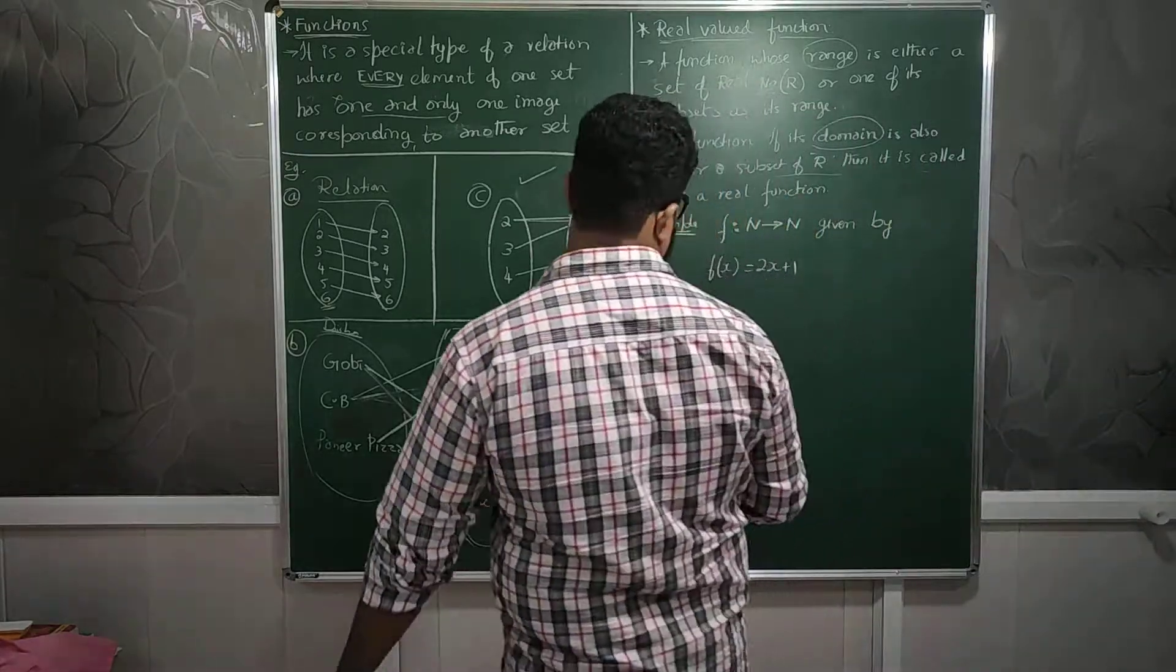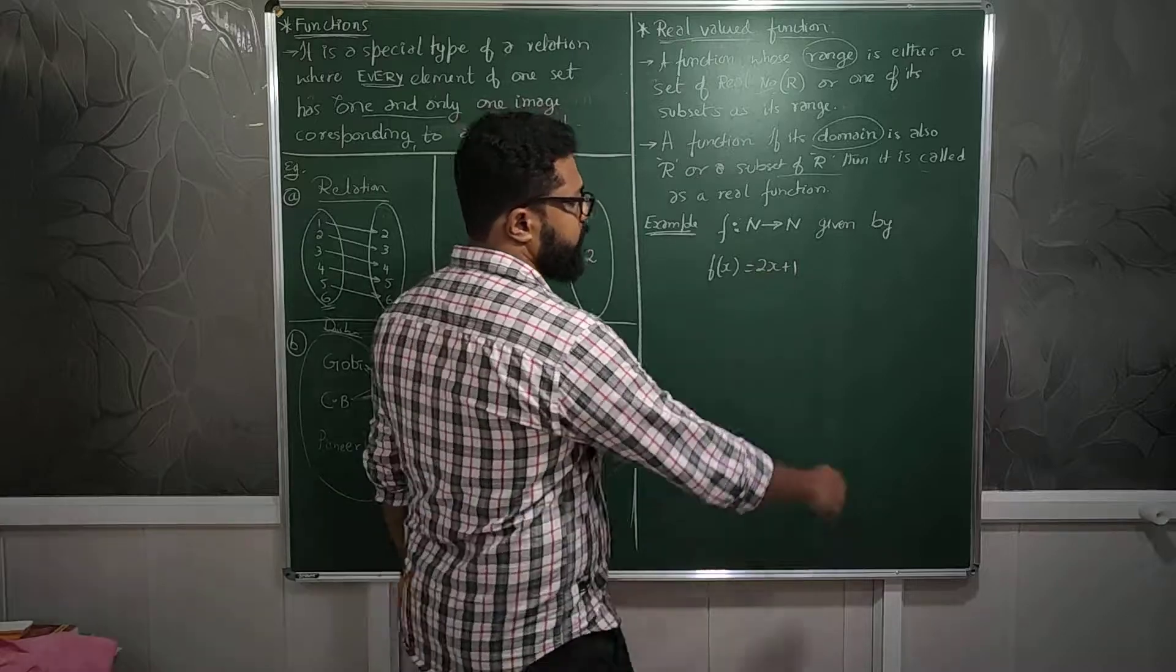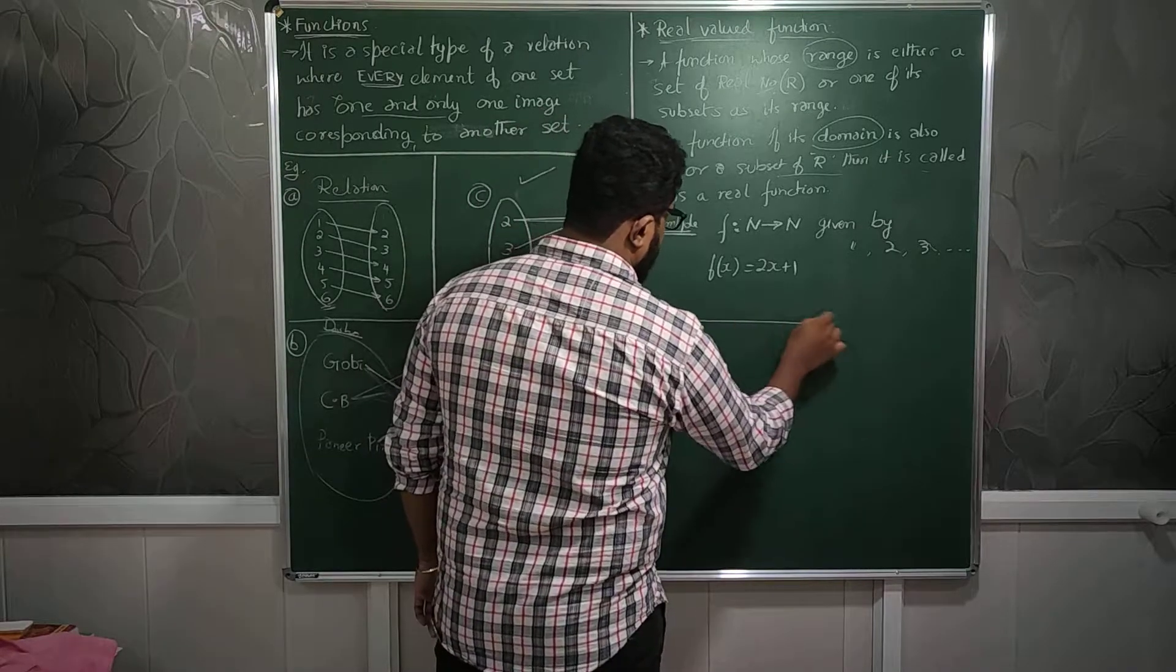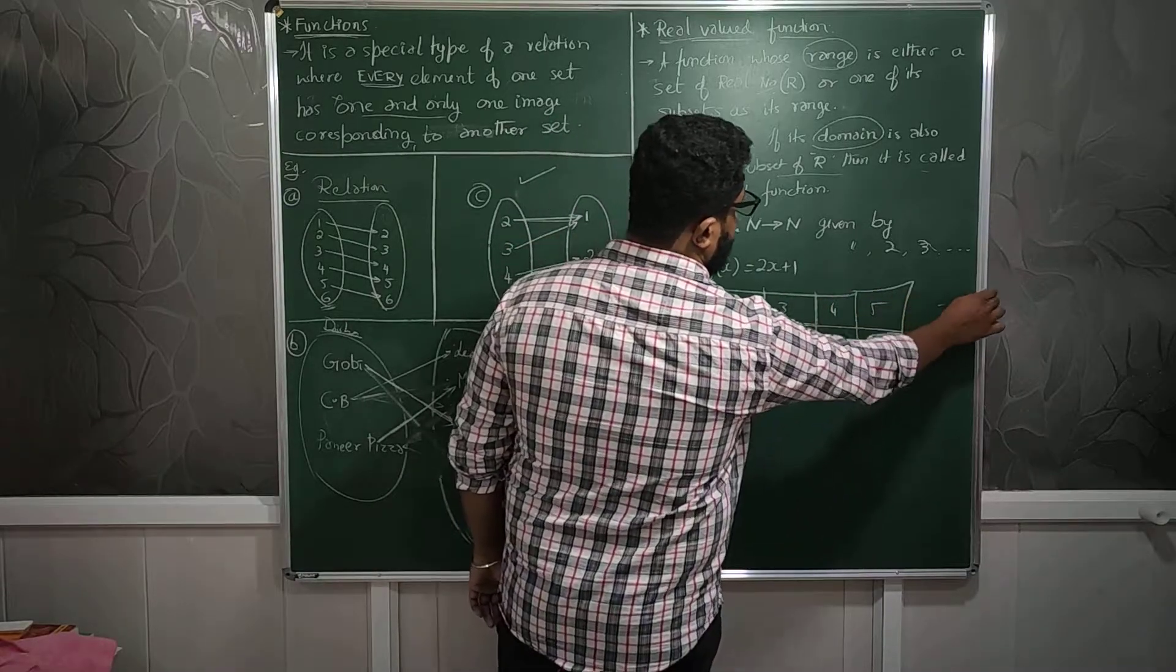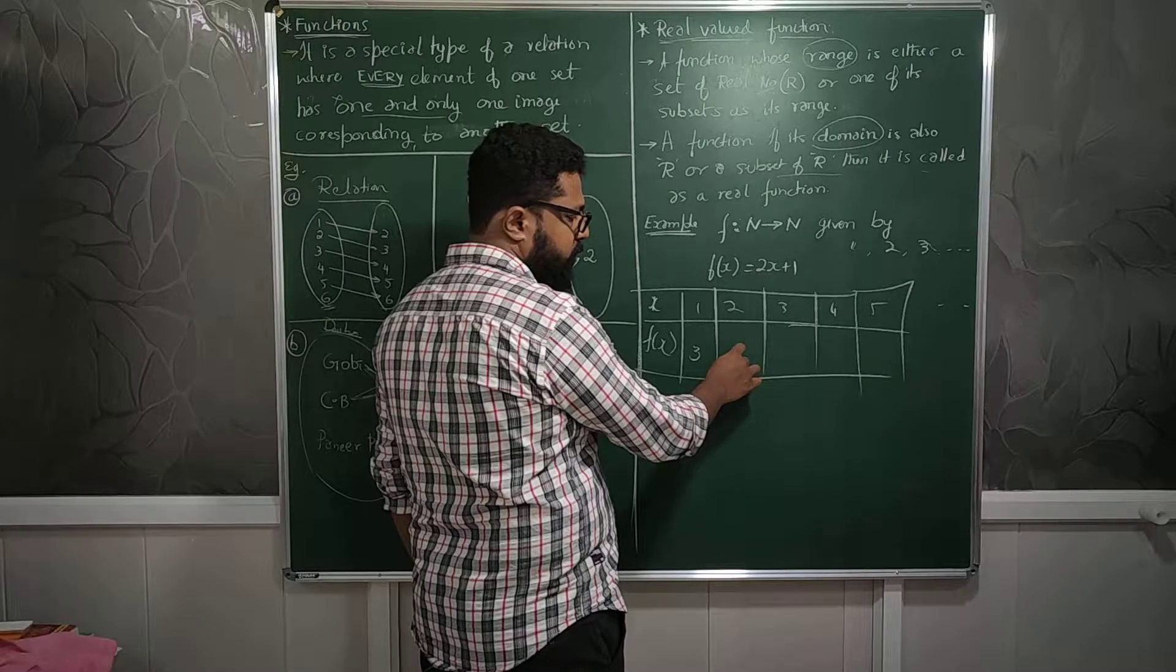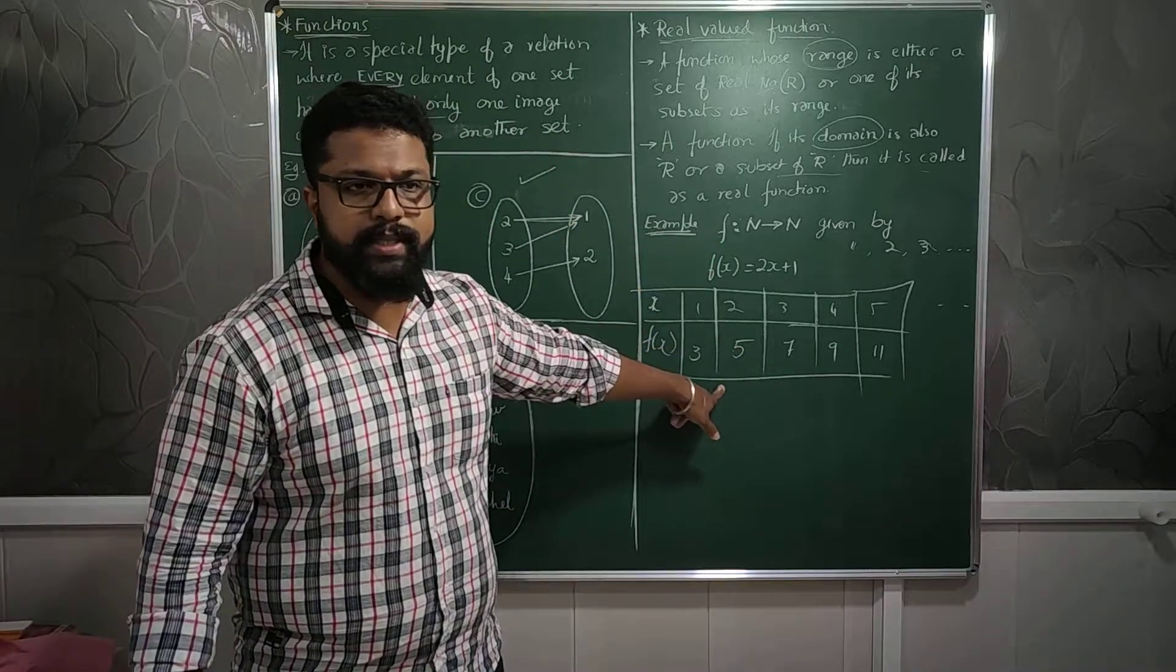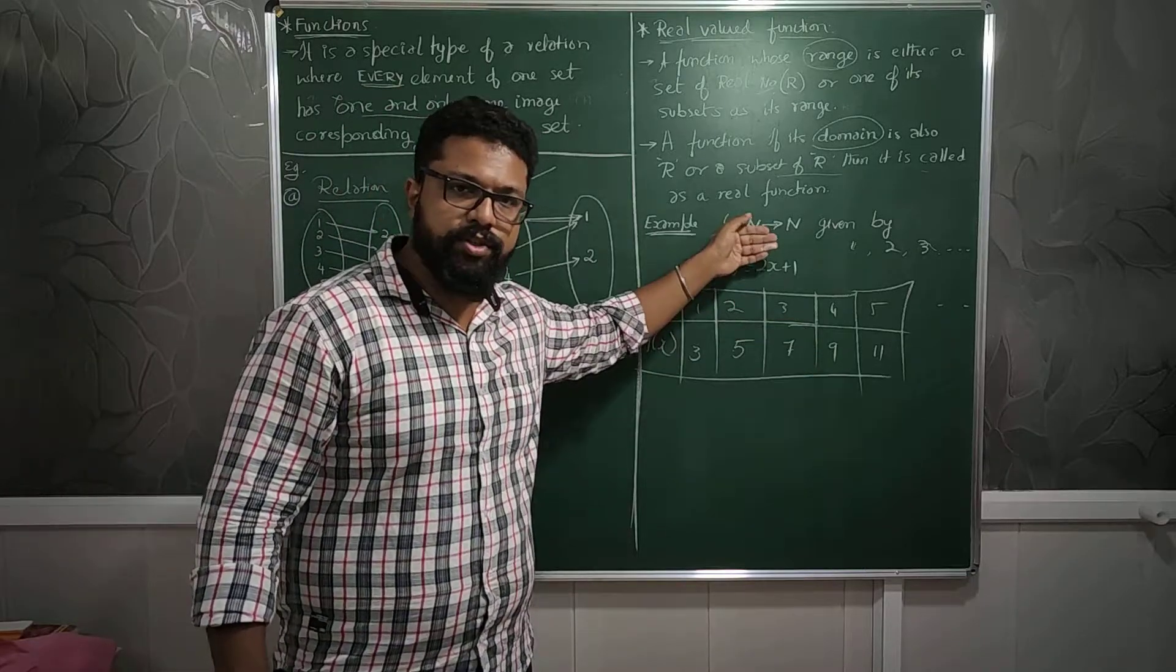We will check an example. This is a very simple example. They have given that the function f is going from the natural numbers. The function is a natural number, so natural numbers we already know start from one, two, three, four, and go on. If x values are one, two, three, four, five and so on, according to the definition f(x) = 2x, I can go on finding different values. When x is one, f(x) is two. When x is two, f(x) is four. Three gives six, four gives eight, five gives ten. Real numbers, whose range is also real. This is an example of a real-valued function. Whose domain is also a real number, this is also a real function.